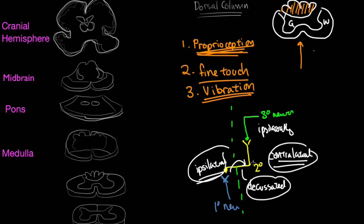Okay, so with that in mind, let's tackle the dorsal column. So, what do we have here? I've drawn a diagram of the cranial hemispheres. So this is up in the brain. Then you've got the midbrain over here, the pons, the medulla.